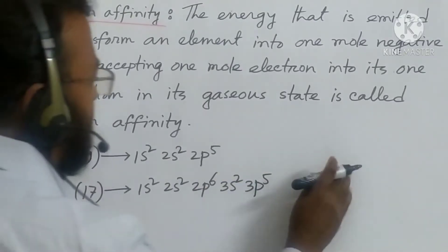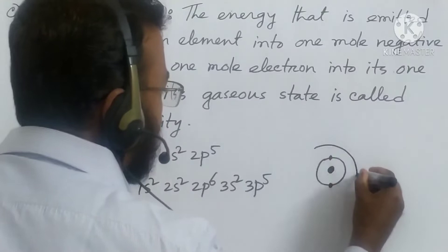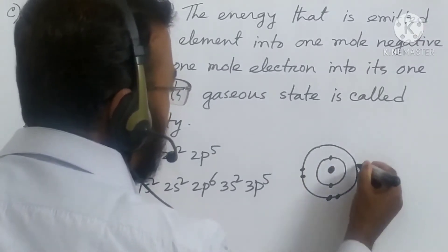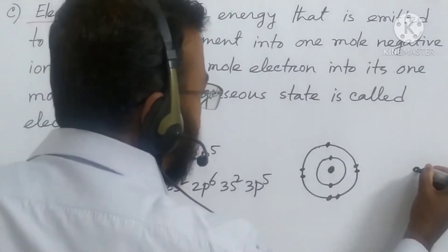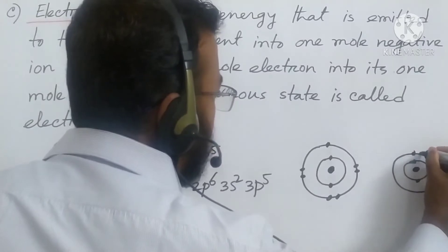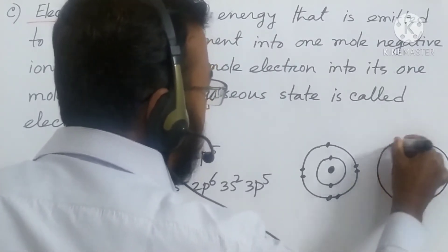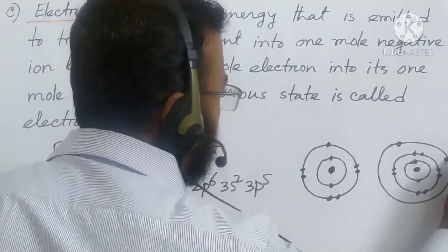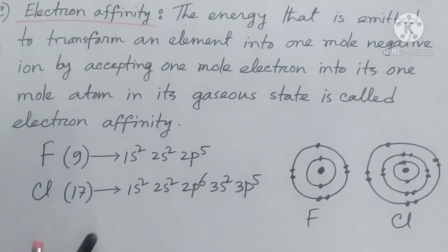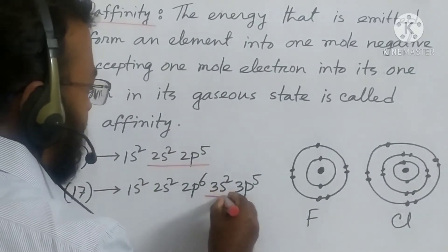Now I am drawing the diagram. Fluorine: first energy level has 2 electrons, second energy level has 7 electrons. Then chlorine: first energy level has 2 electrons, second energy level has 8 electrons, third energy level has 7 electrons. In both cases we see that the number of electrons in the outermost energy level is 7 — 7 electrons in the second energy level for fluorine, and 7 electrons in the third energy level for chlorine.